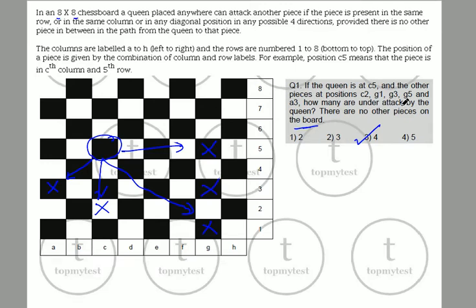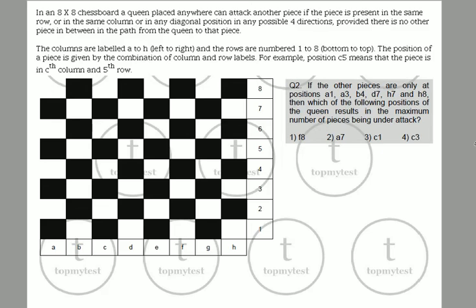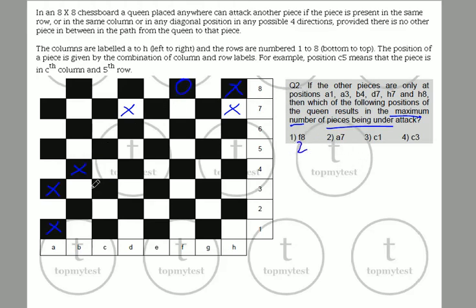The next question says: if the other pieces are only at a1, a3, b4, d7, h7, and h8, which position of the queen results in the maximum number of pieces being under attack? Let's check each option case by case. If I put the queen at f8, it can attack two pieces. If I put it at a7, it can also attack two pieces. Both are out since they give equal results.